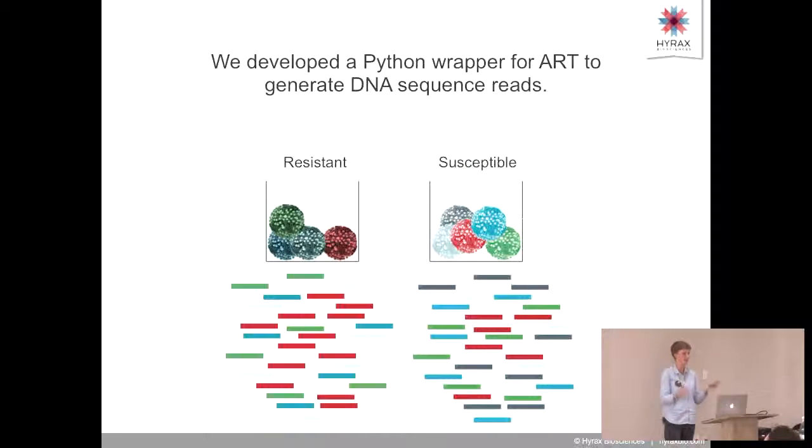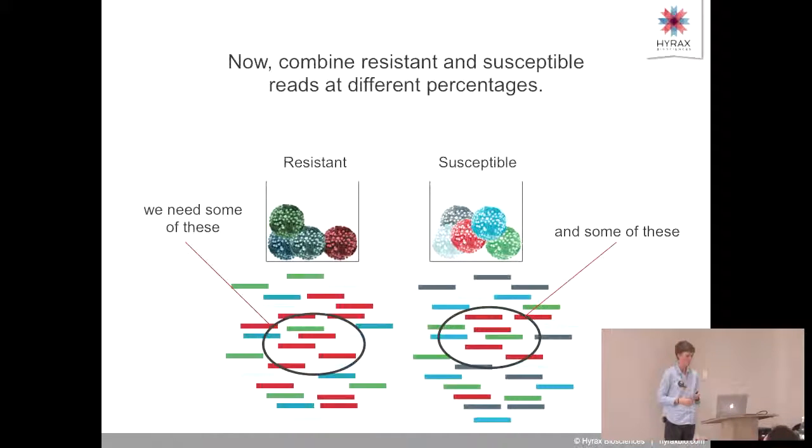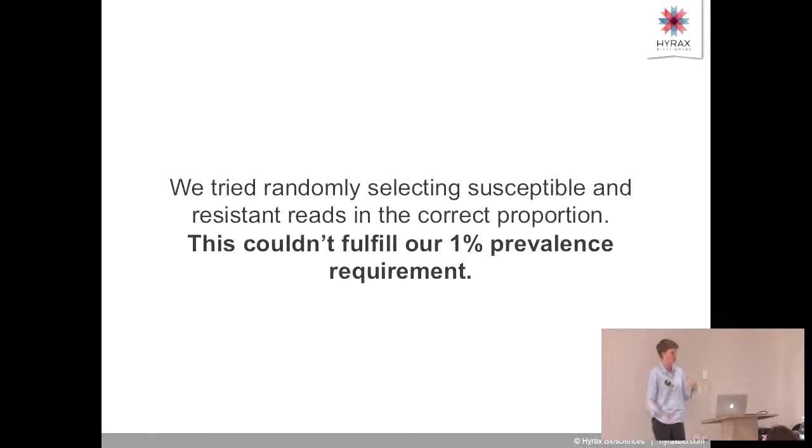We developed our own Python wrapper for ART to generate these reads. We've released it, so I'll give you GitHub links at the end. Now we only have one more step to get our samples. We need resistant sequences and susceptible sequences, and we need to combine them at different percentages, different prevalences, to get out resistance. We started by randomly selecting resistance and susceptible reads in the correct proportion and thought that would be fine. But we found the wiggle is such that we couldn't fulfill our promise to look right down to 1% in the reads. You might not be able to get 1% in the human body out of the reads, but we have an in-house joke that we take very seriously: we want to always be 10 times as accurate as we need to be because there are lives on the line. So we decided to make a simulation much more accurate than the machine could be.